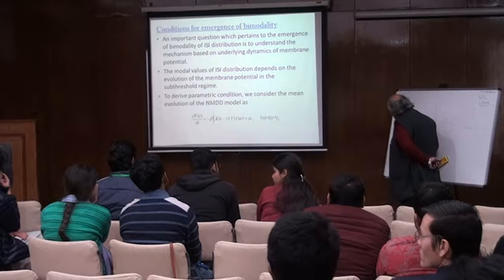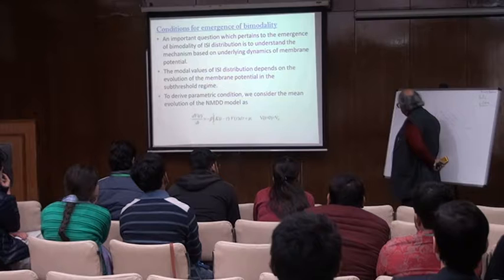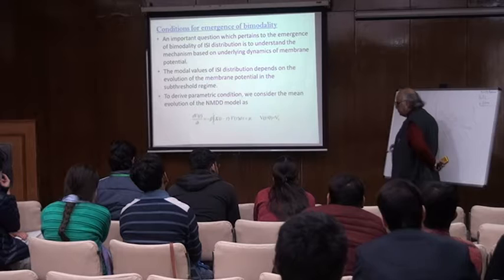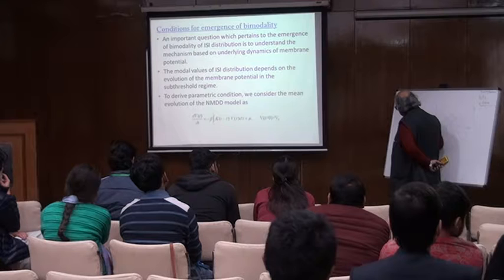Any fluctuation which comes will reach here. And if it reaches here, you will find there is some mode coming here. And if this is also very high, then something like here will also come, and you will find that there is a bimodal distribution.